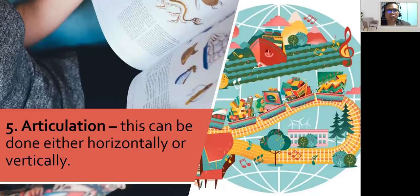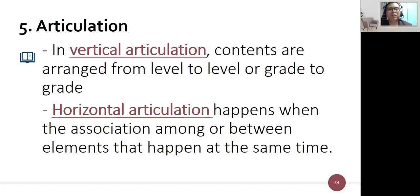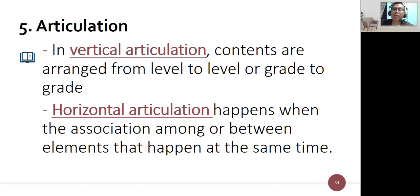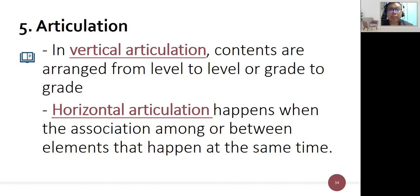The fifth dimension is articulation, which can be vertical or horizontal. Vertical articulation arranges contents from level to level or grade to grade — grades 1 through 6, grades 7 through 10 for junior high, grades 11 and 12 for senior high, and first through fourth year college. Horizontal articulation happens when there is association among elements occurring at the same time — within the same level but with expansion of the contents or topics delivered.